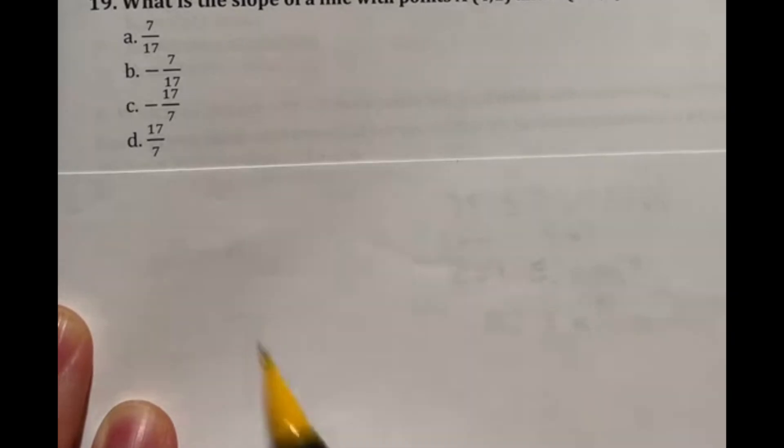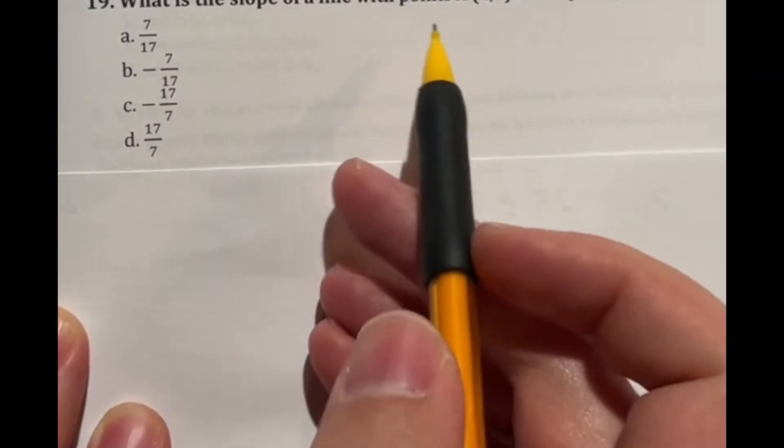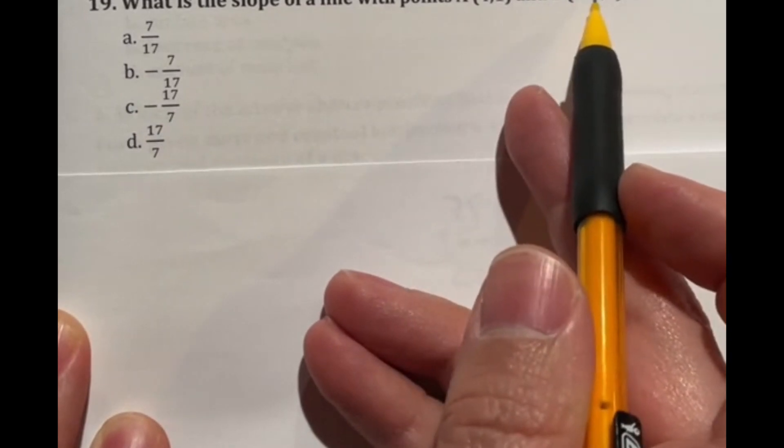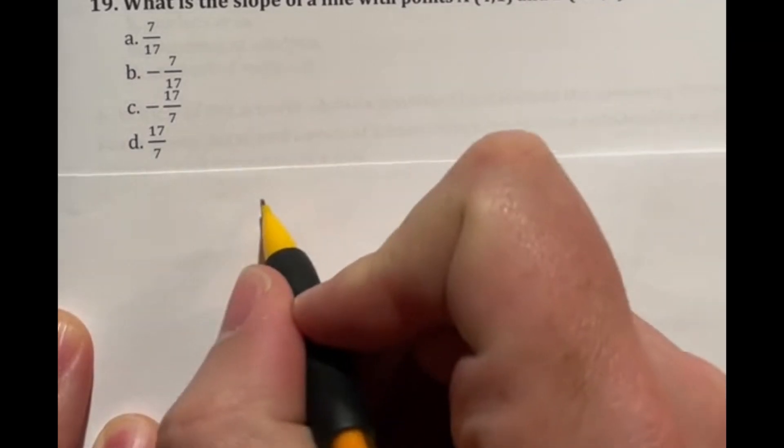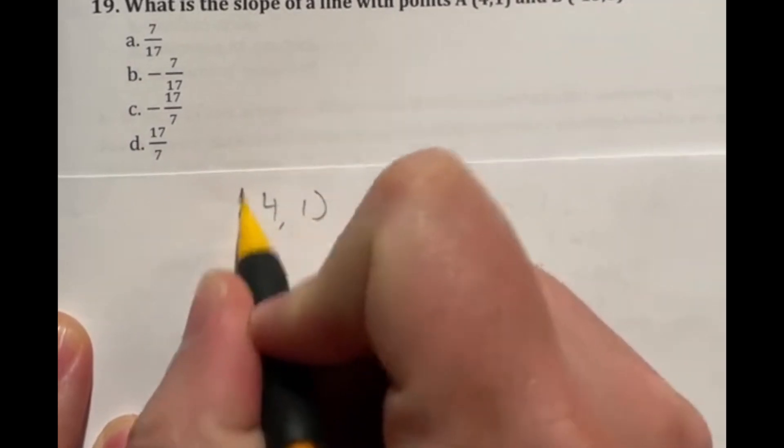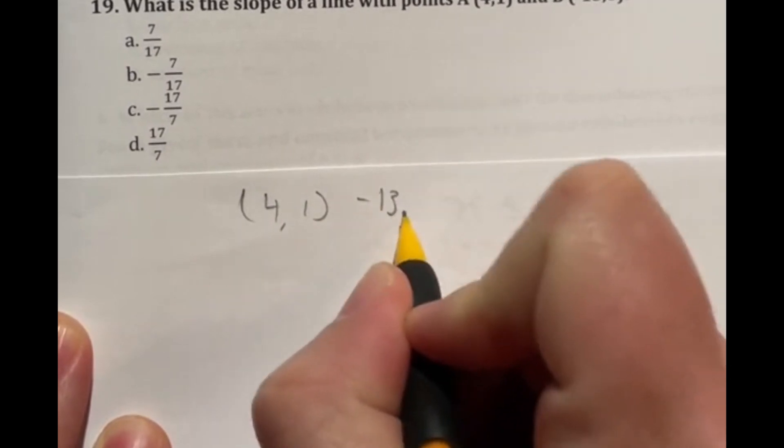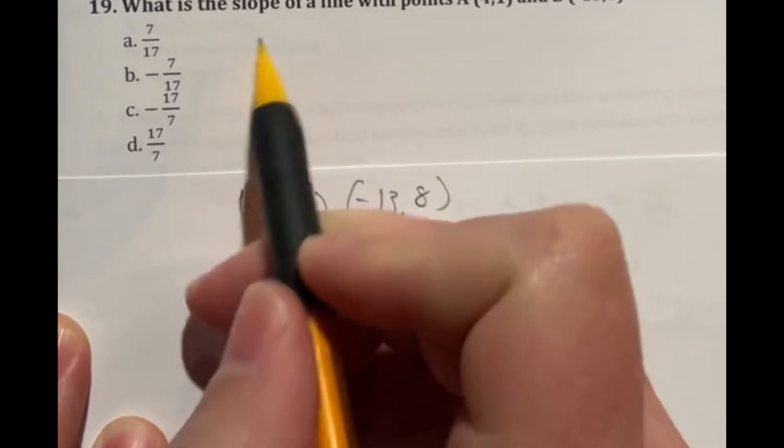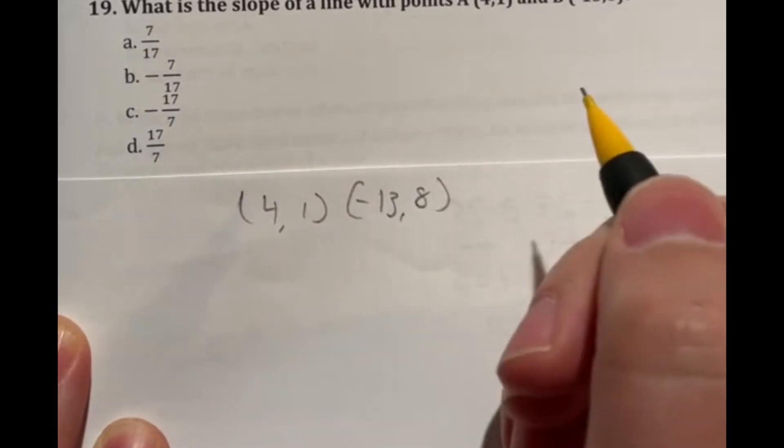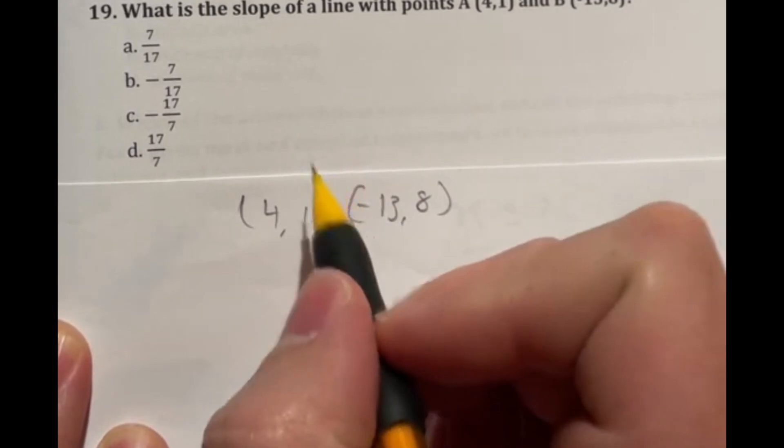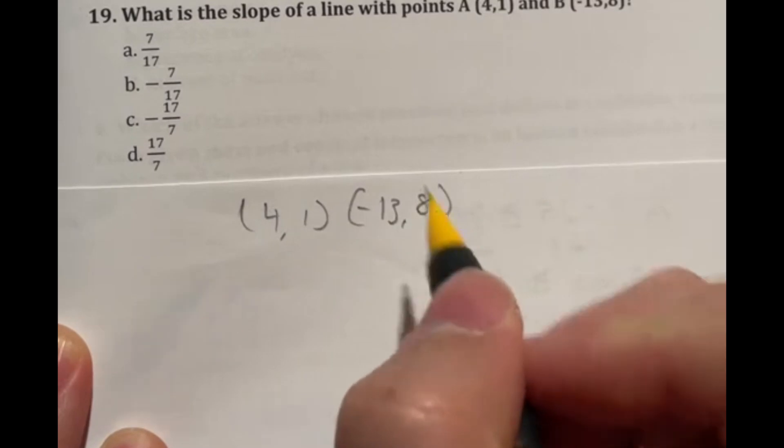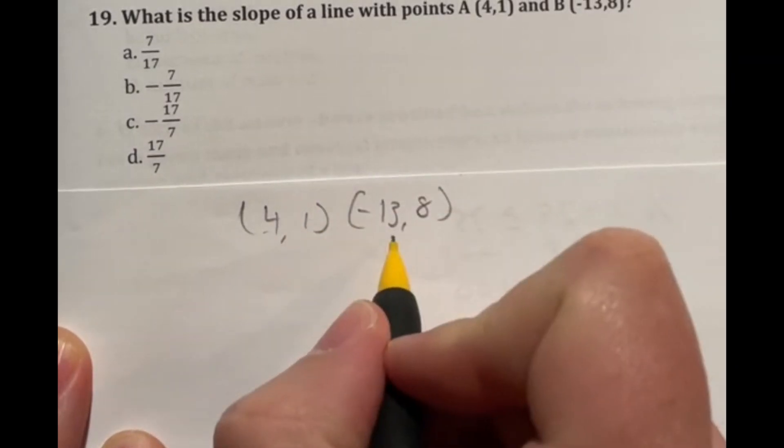Number 19 says what is the slope of a line with points A (4,1) and B (-13,8). So we're looking at two points, 4,1 and negative 13,8. Now we got to find the slope of the line. Well, if you have y equals mx plus b, the m is always our slope. And that's basically our rise over run. So it's how much you go up and over on your line each time. But in this case, we're given two points.